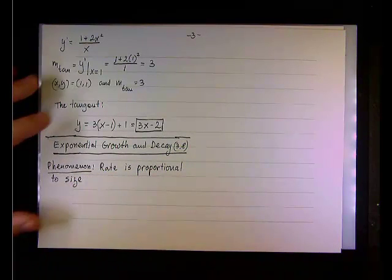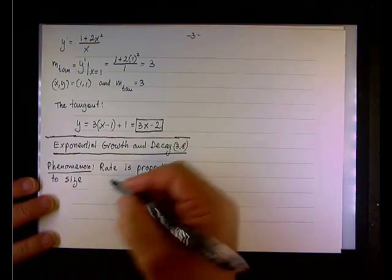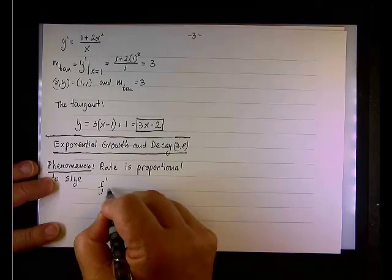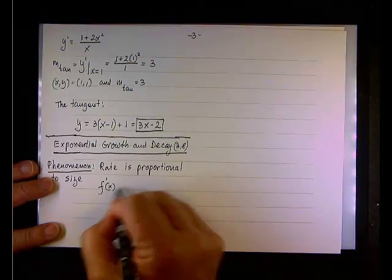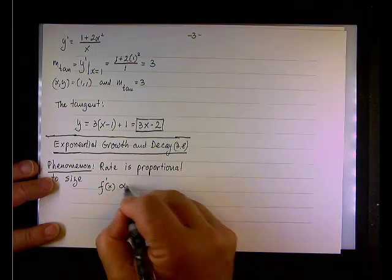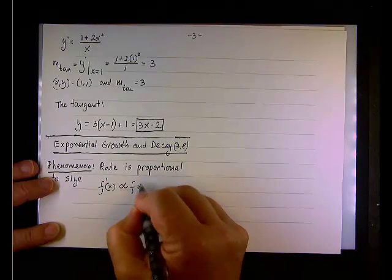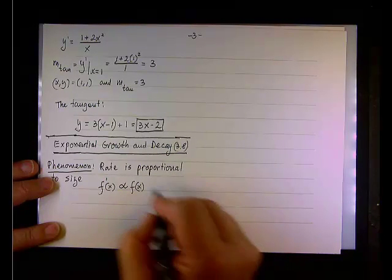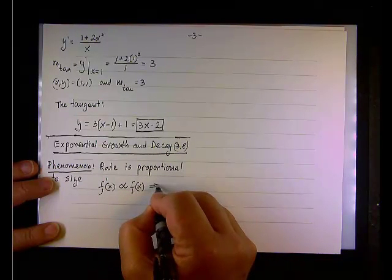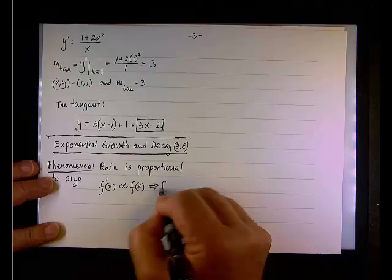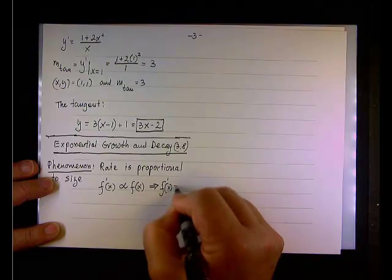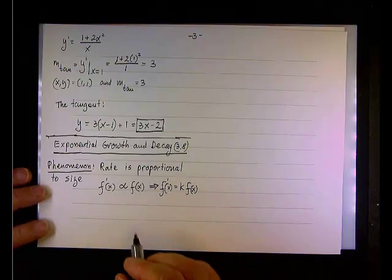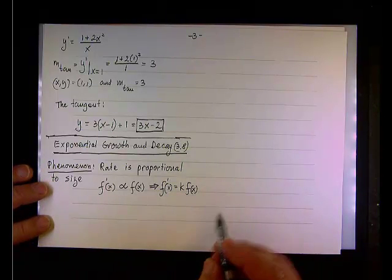What does it mean? If a certain population has a function that is described as f of x, then the rate will be the derivative, f prime. We're going to say that f prime is proportional to f of x. Or, if we want to remove the proportionality, then you can say that f prime of x equals some constant times the function. We call it k.